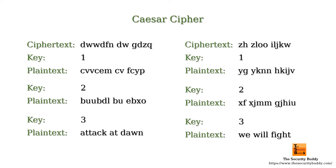Now, if anyone sends a ciphertext using the Caesar cipher with key equal to 3, the attacker can easily decrypt the ciphertext with the help of the deduced key and recover the plaintext.